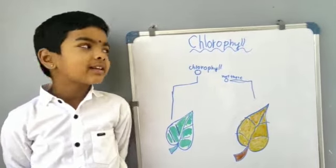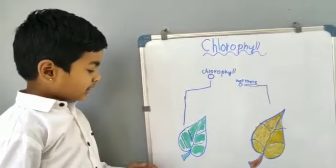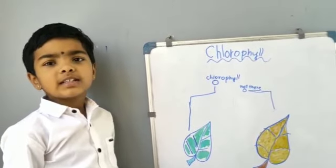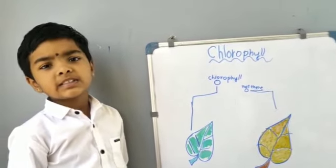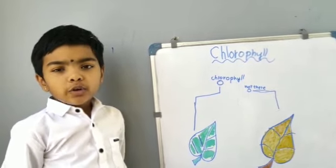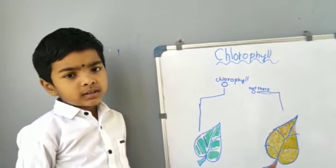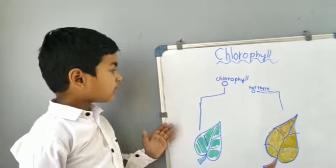Hi friends, today's topic is chlorophyll. Chlorophyll is a substance which is in leaves and makes the leaves look green in color.